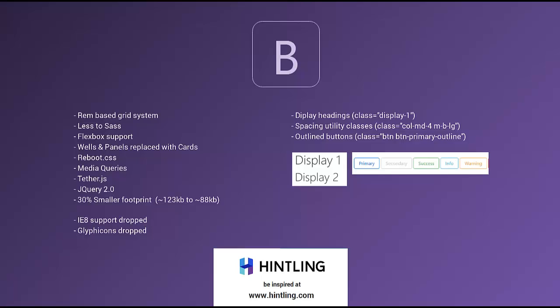Last but not least, we also got outline buttons in the new version. It's very easy — similar to how you'd write a regular button with 'btn' and 'btn-primary' or 'btn-secondary', you simply finish off with 'outline' and you get an outline version of that button. Very easy to make outline buttons in Bootstrap 4.